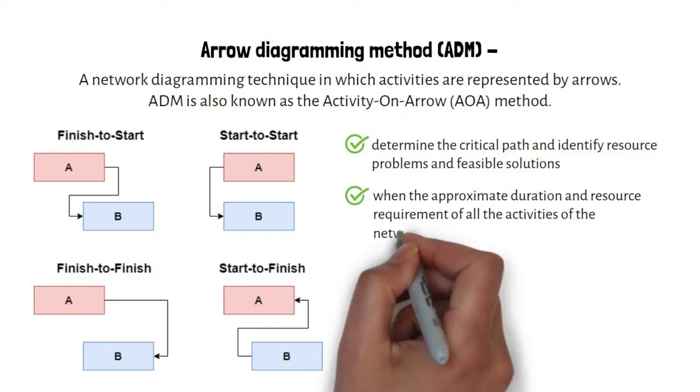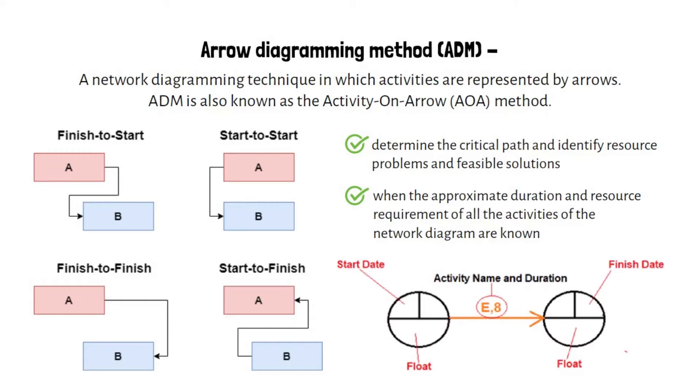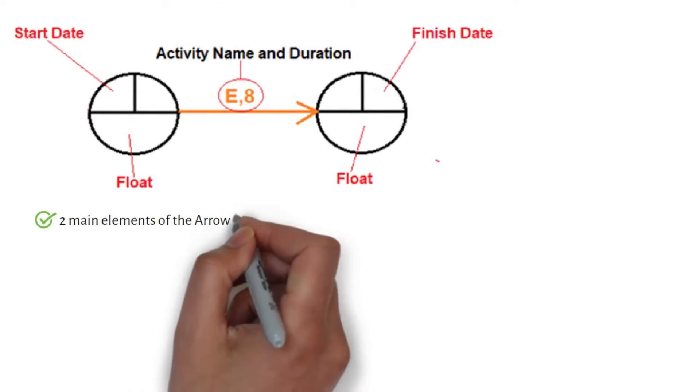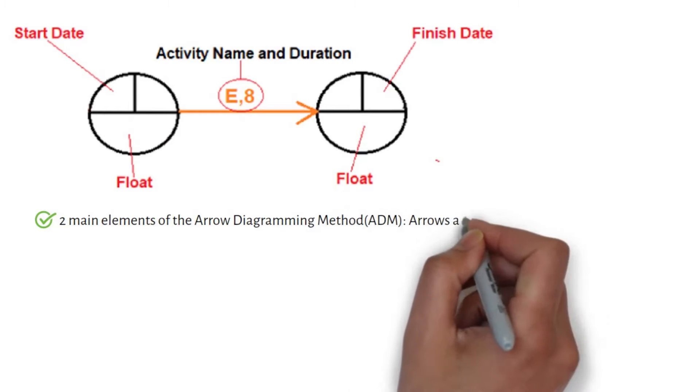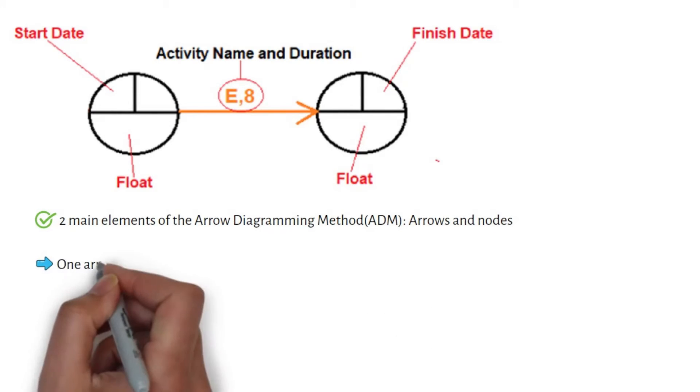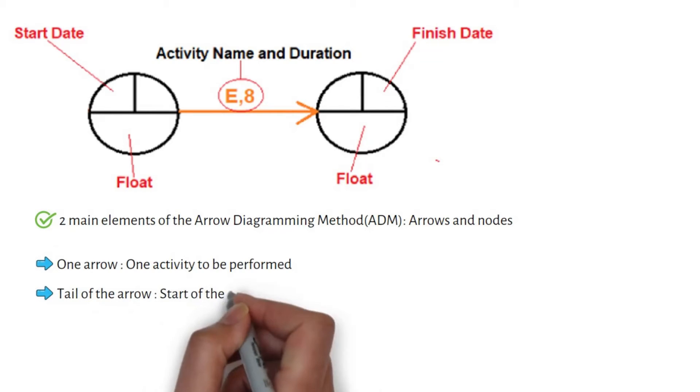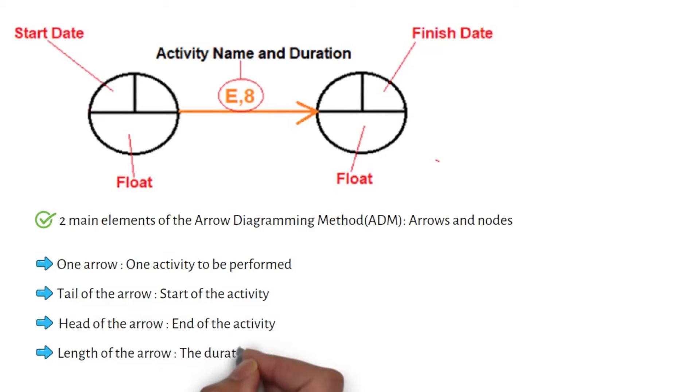Main elements of arrow diagramming method. There are two main elements of the arrow diagramming method which are arrows and nodes. One arrow represents one activity to be performed. The tail of the arrow is the start of the activity, the head of the arrow is the end of the activity, and the length of the arrow is the duration of the activity.